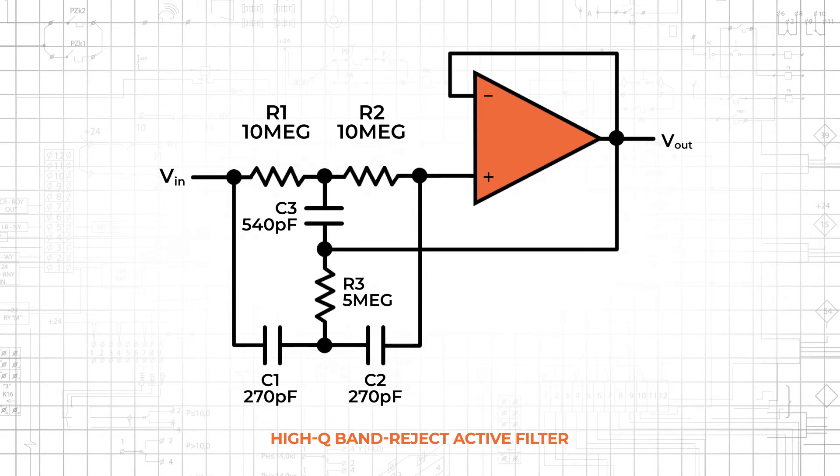The configuration consists of two T-shaped passive component networks with two resistors and a capacitor acting like a low-pass filter and two capacitors and a resistor acting like a high-pass filter. Thus, the circuit has a low-pass stage and a high-pass stage working in parallel.